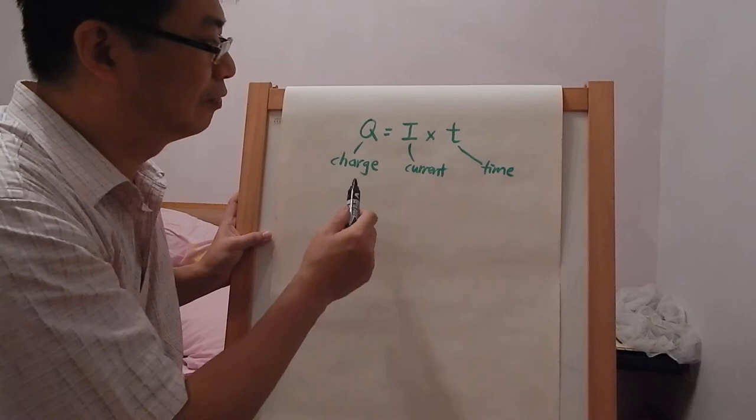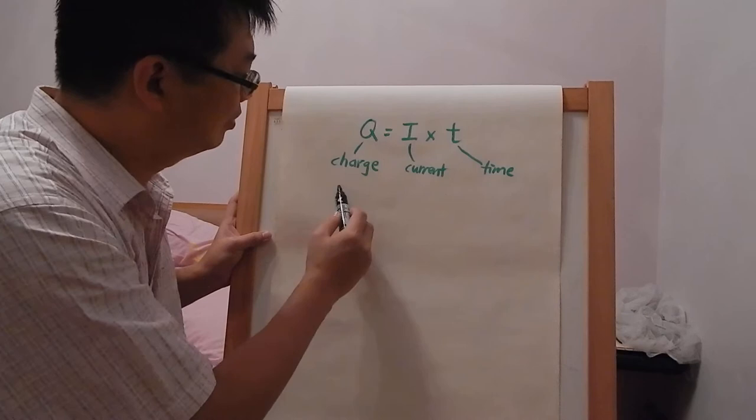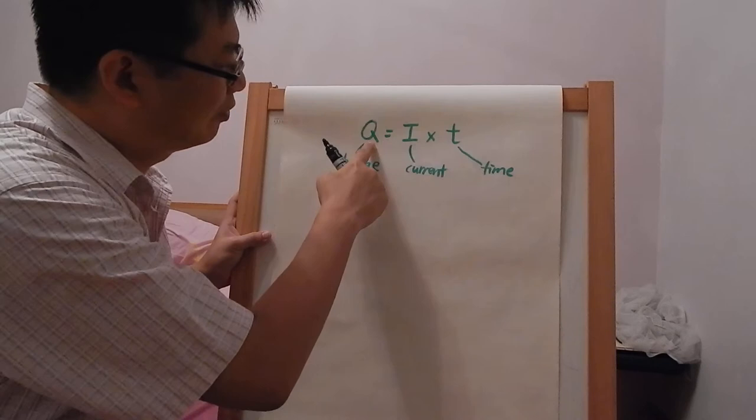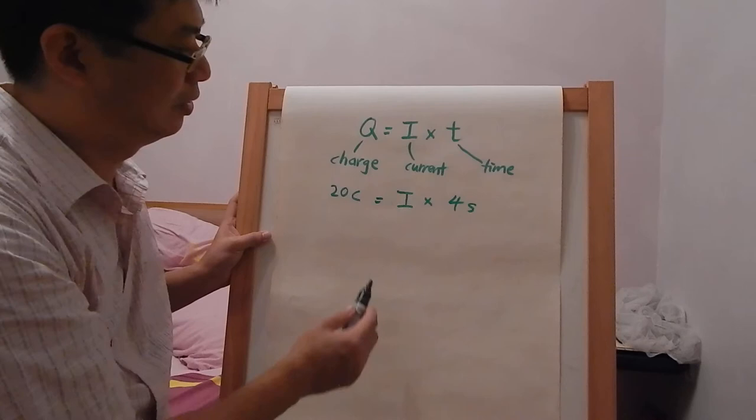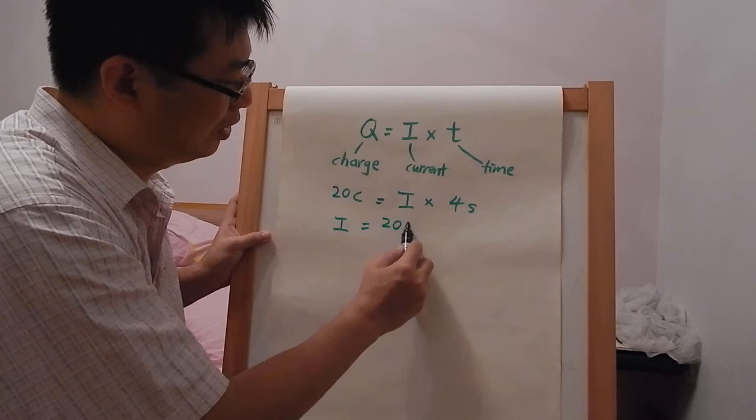Let's look at an example. Suppose 20 Coulombs (C is the unit for charge) of charge equals current times 4 seconds. If we rearrange this, current will be 20 Coulombs divided by 4 seconds.